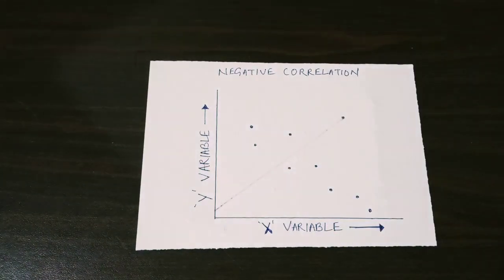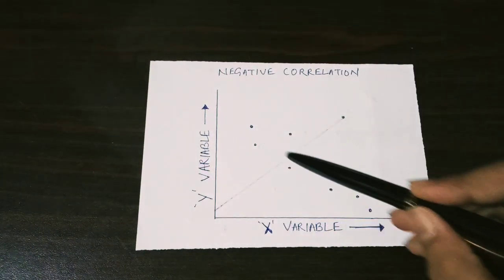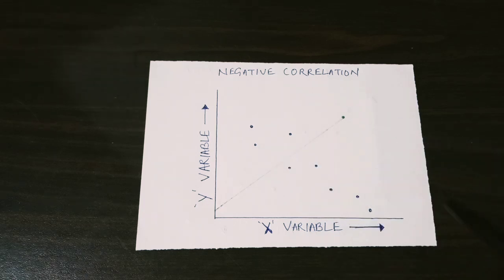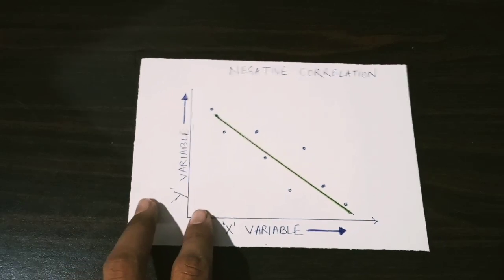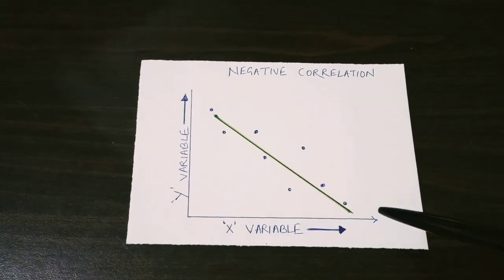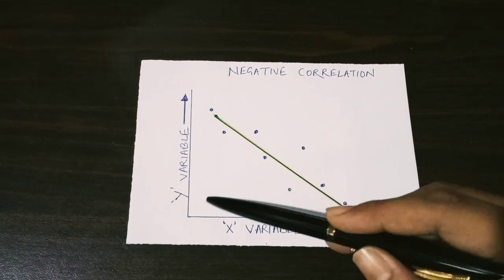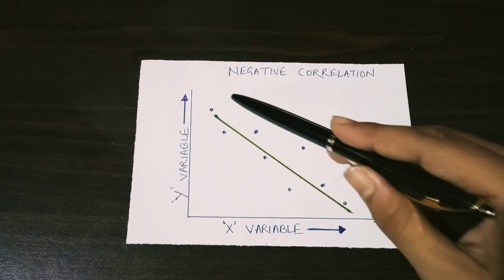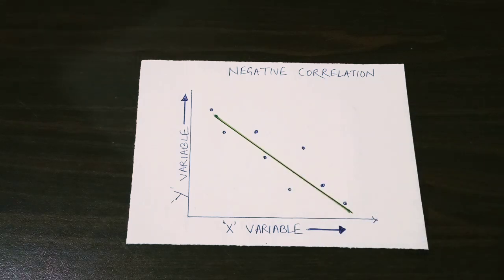Negative correlation happens when X and Y variables are inversely proportional. In this graph we can see the graph is going down — if you plot a straight line, the slope is going down. This shows the example that X and Y variables are negatively correlated.